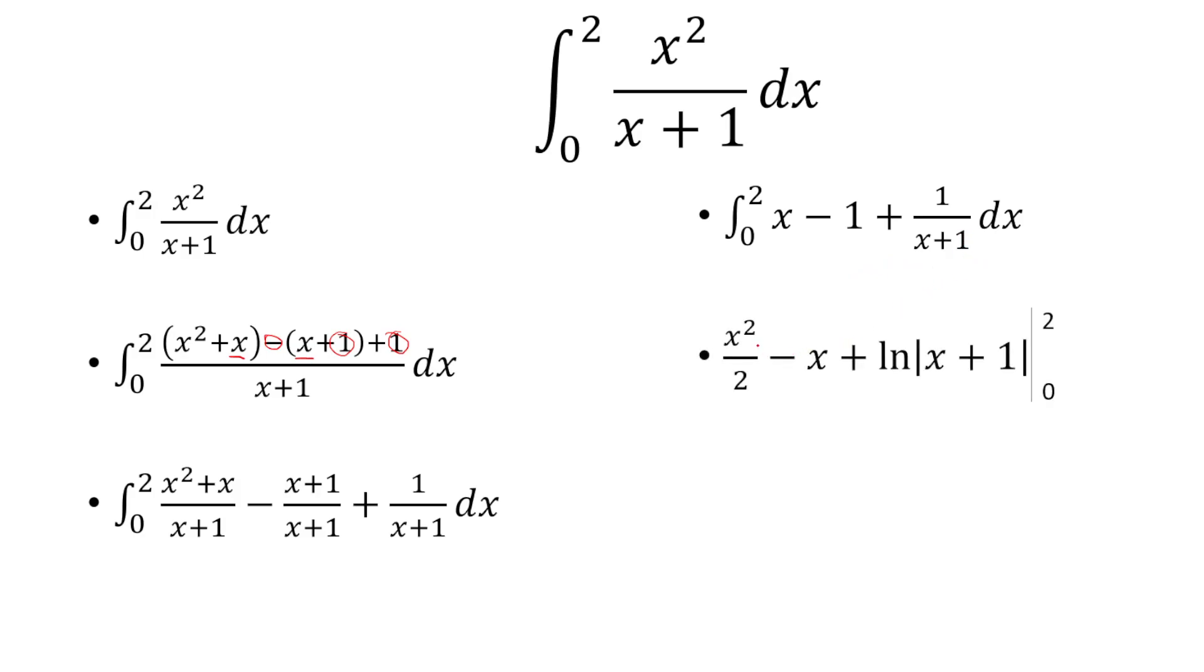Integrate. We have x squared over 2 minus x plus ln of x plus 1. If you plug in 2, you get ln of 3. If you plug in 0, you just get 0. So the final answer is ln of 3.